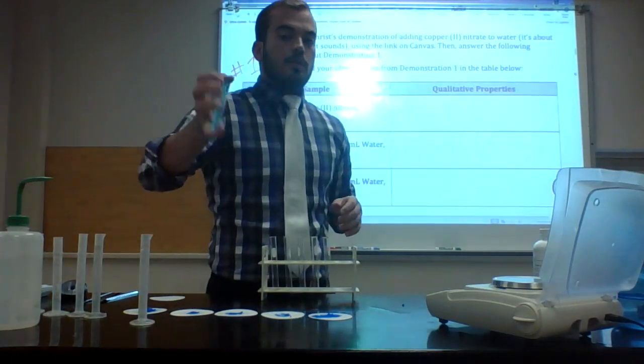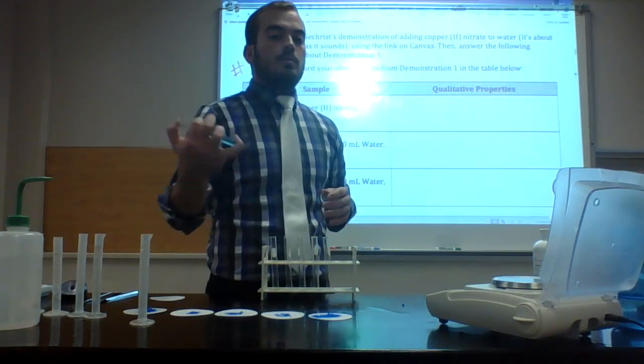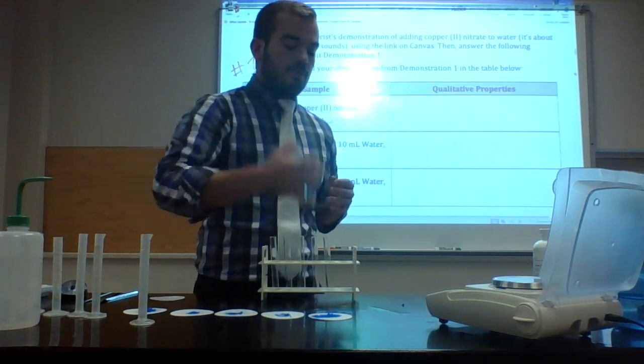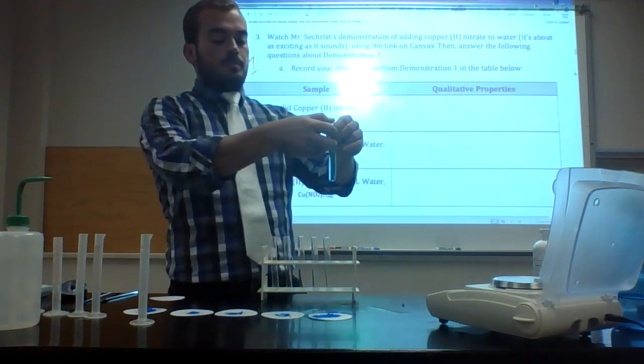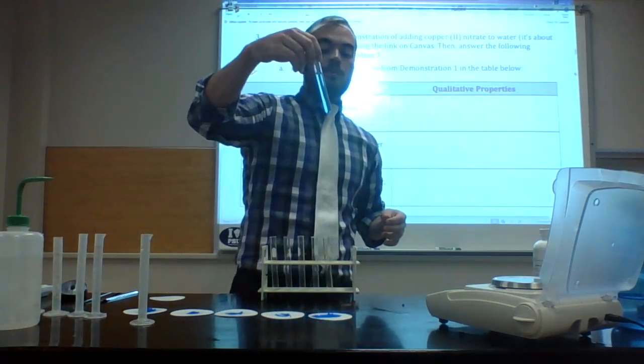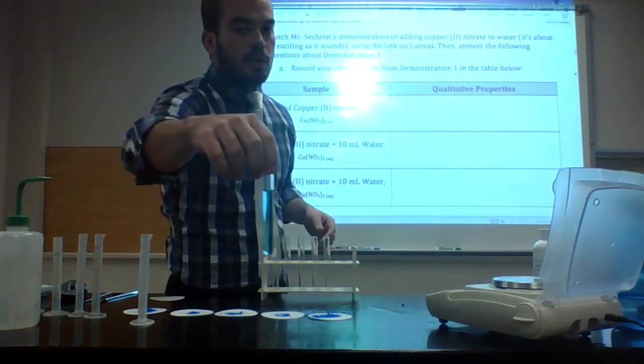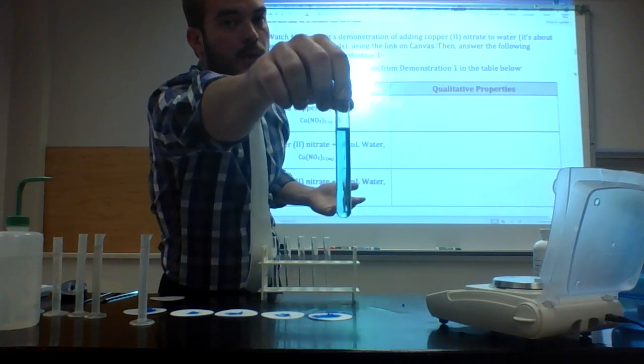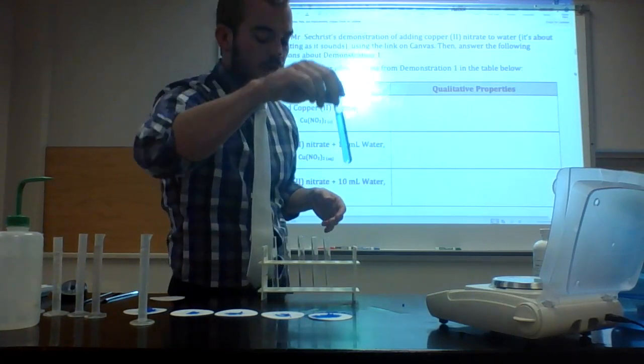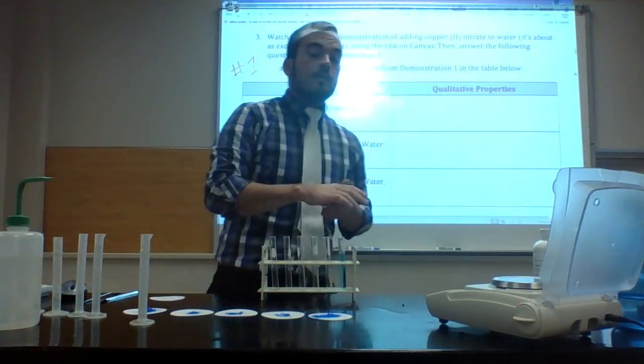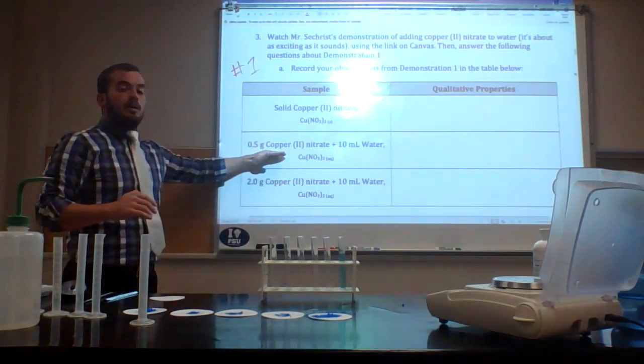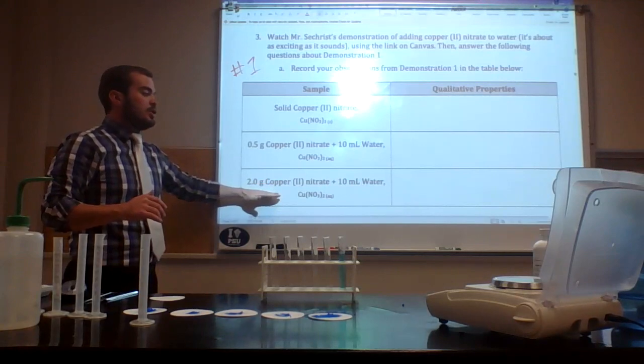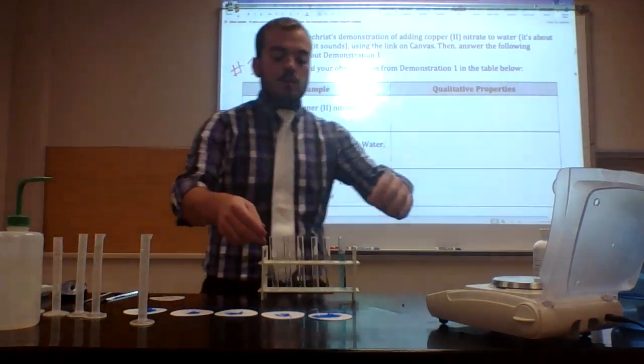You really shouldn't just put your thumb over the test tube like this, it's bad practice, but I'm just trying to make it a little bit faster for everyone. Most of the copper is dissolved already and the rest will shortly. As you can see it makes a nice light blue solution, and that's why we picked copper(II) nitrate, it's just such a nice color. So that is 0.5 grams of the solid with 10 milliliters of water.